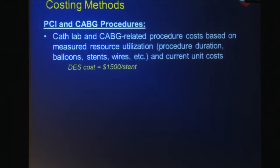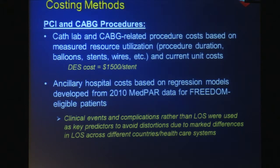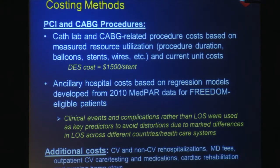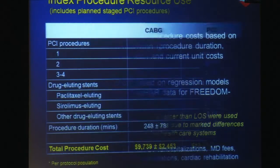A little bit about our costing methods. This was a prospectively designed study with detailed resource utilization collected for the index procedures and throughout the follow-up period. Cath lab and CABG-related procedure costs were based on measured resource utilization and current unit costs, and we applied a cost for drug-eluting stents of $1,500 per stent. Even though this was an international study with patients enrolled from 18 different countries, we were careful to apply costing methods that were not influenced by length of stay, which can vary across different health care systems. Our cost analysis considered not only costs associated with the index procedure, but costs associated with all cardiovascular and non-cardiovascular re-hospitalizations during follow-up, physician fees, outpatient cardiovascular care, medications, cardiac rehabilitation, and nursing home stays.